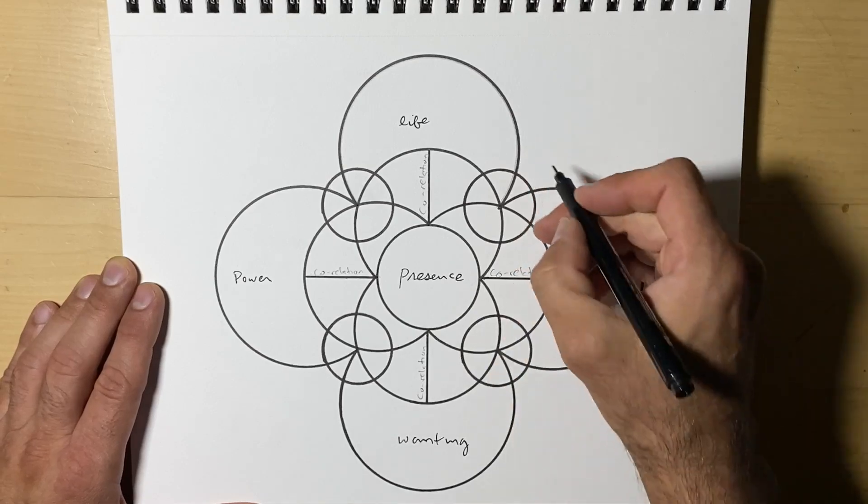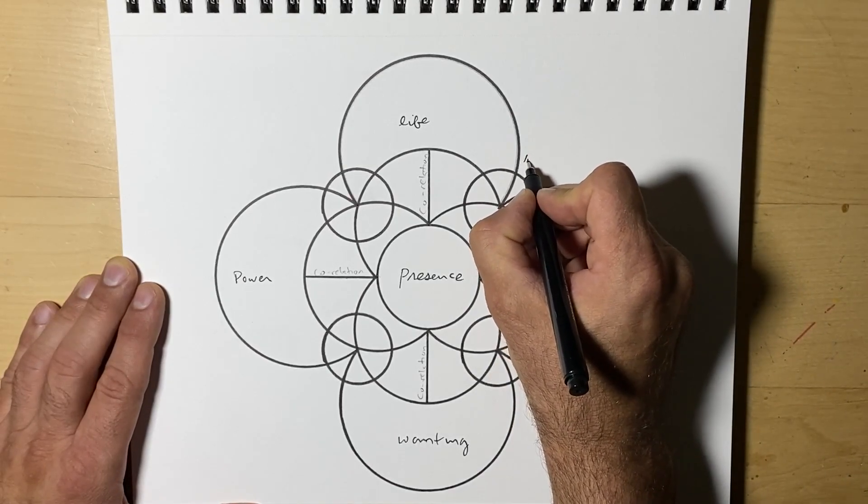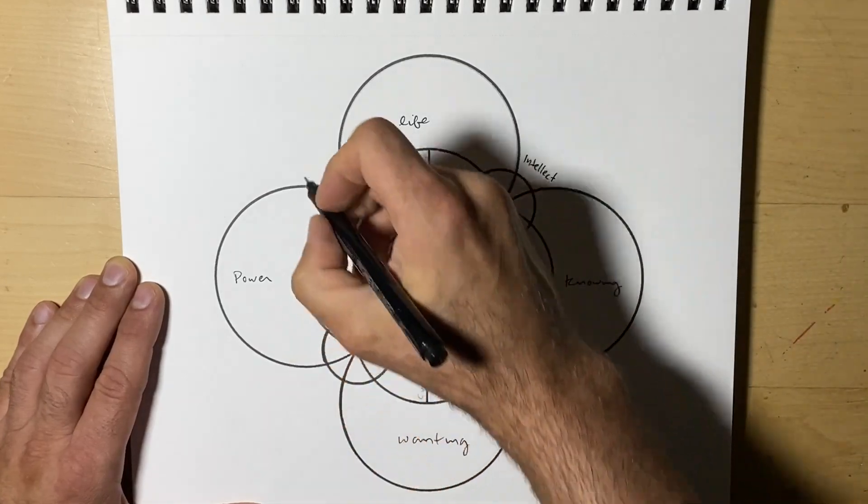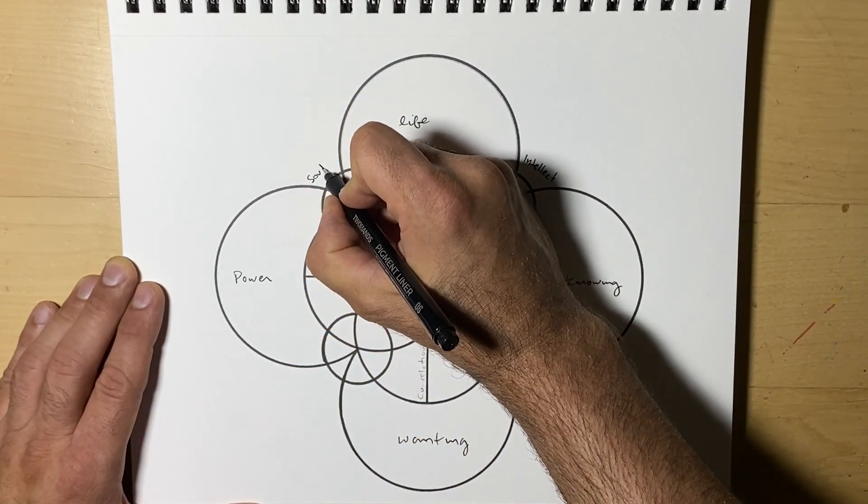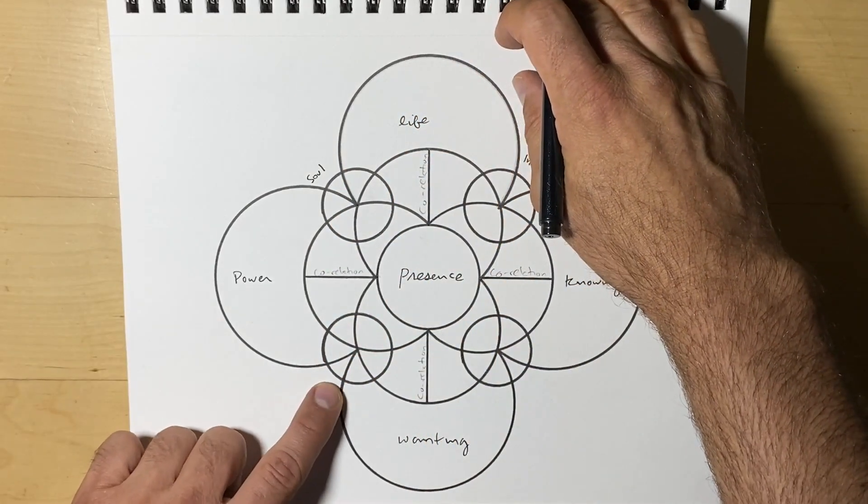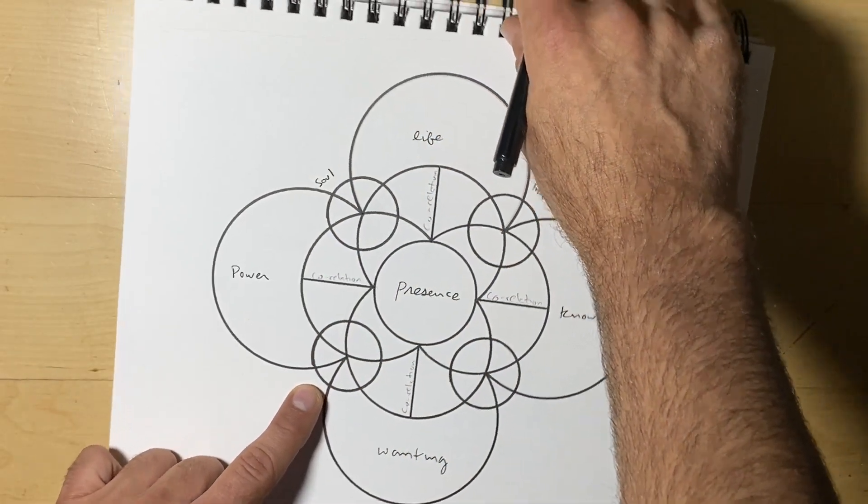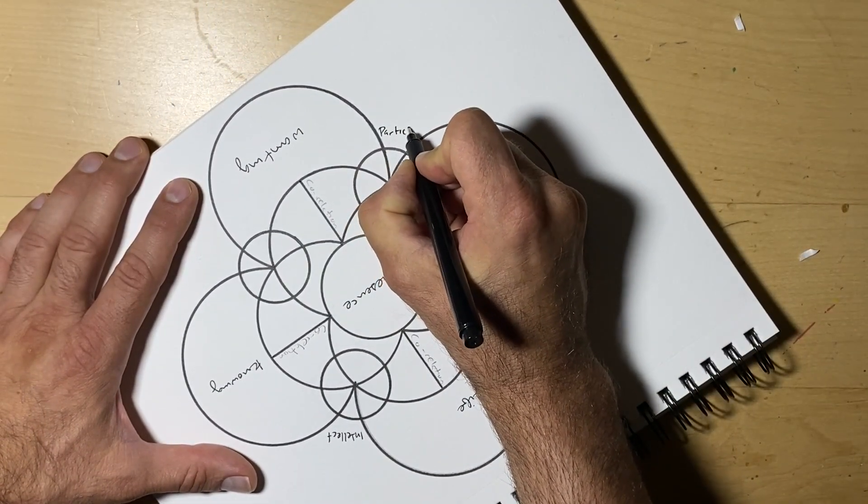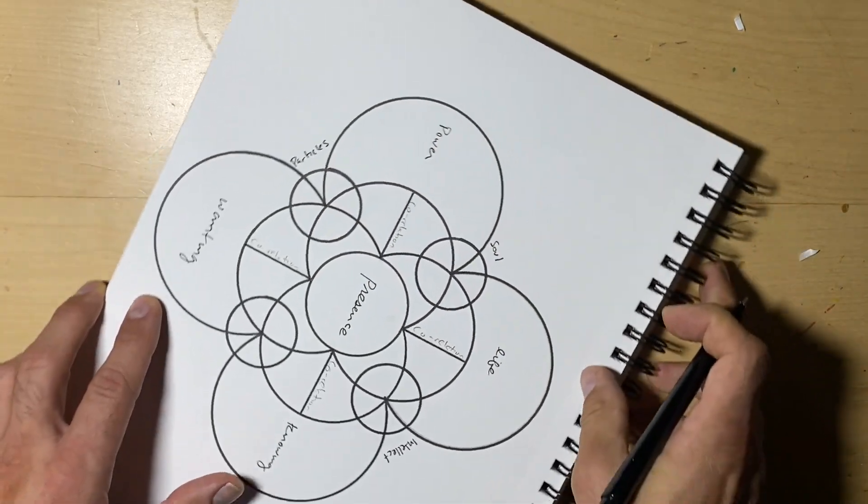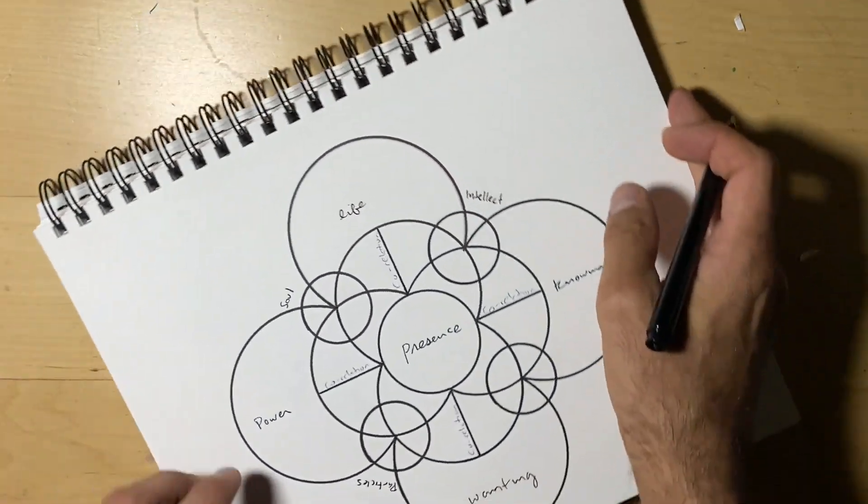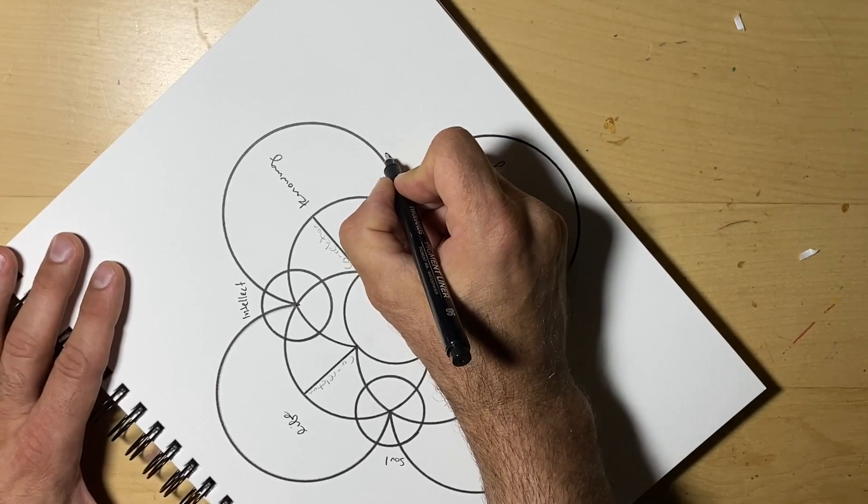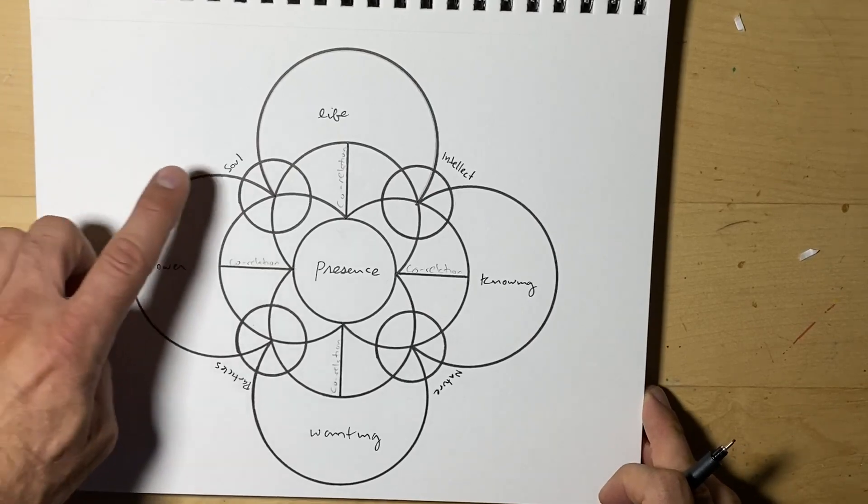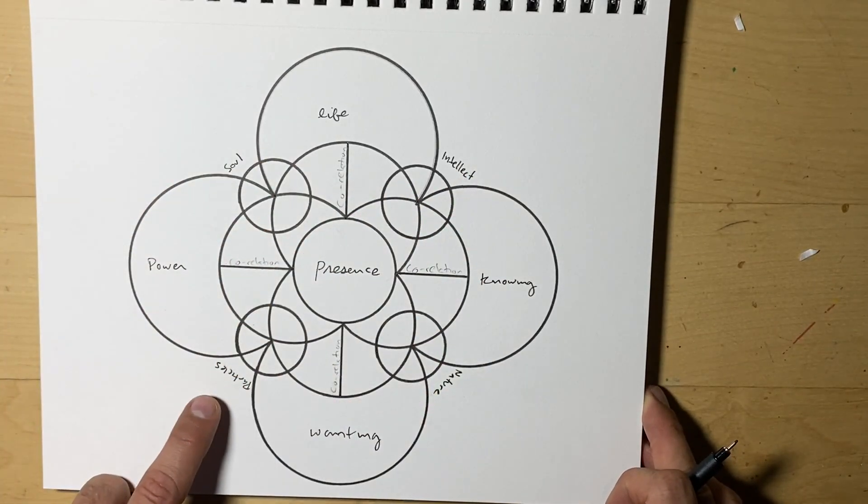Up in this corner here we have intellect. On the left side we have soul. On this corner here we have particles. And on the other corner we have nature. Soul, intellect, nature, particles.